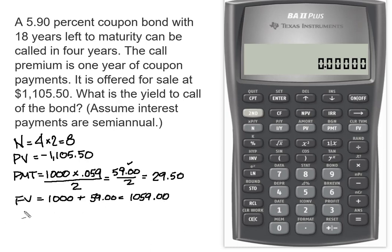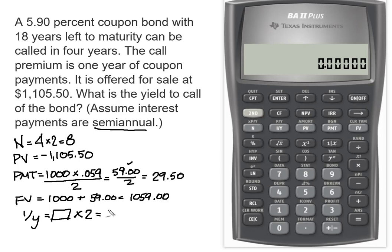The last thing we're going to do is solve for IY. When you get your value for IY, all of that is expressed semi-annually. So take your IY — whatever your BA-II gives you — and multiply it by 2, and that will give you the total yield to call.